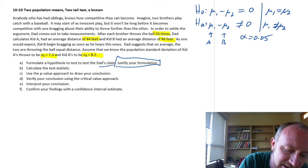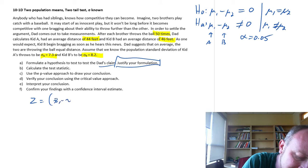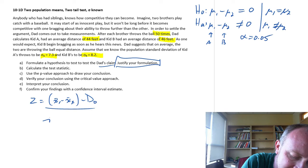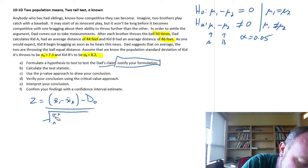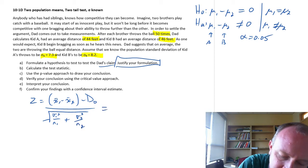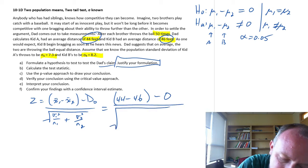Let's get into our test statistic. Here again, this is a z-test: (x̄₁ - x̄₂) minus the hypothesized value divided by our standard error, which is the square root of σ₁²/n₁ + σ₂²/n₂. Now we can just put in our values. Kid A was 44, Kid B was 46. Hypothesized difference is 0. Kid A's standard deviation is 7.3, and they both threw it 50 times, so our sample sizes are the same. 8.2 squared over 50.